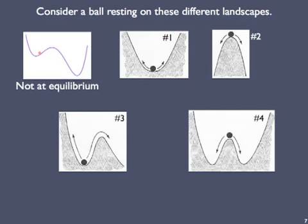Let's consider some more examples. Here are several sketches of a ball on a curved surface. In the top left sketch, the ball is not at equilibrium — in the next instant, it will roll downhill to the left. However, in all four of the other sketches, the ball is at rest, so each of these systems is at equilibrium, barring any outside disturbance. We add arrows to show the directions the ball could move when the system is disturbed. For sketch number one, this is a stable configuration — that ball might rattle around after you shake it side to side, but it'll settle back into its original position soon after the disturbance ends.